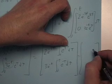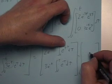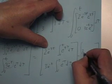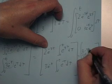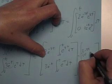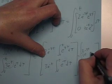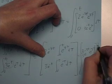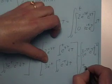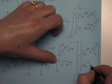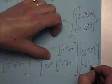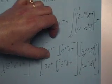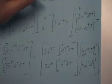Taking these integrals: the integral of an exponential means dividing by the coefficient, so we get (2/3)e^(-3t) times e^(3tau) evaluated from zero to t. Similarly, the second term is 3e^(-t) times e^(tau) evaluated from zero to t, since the integral of e^(tau) is just e^(tau).